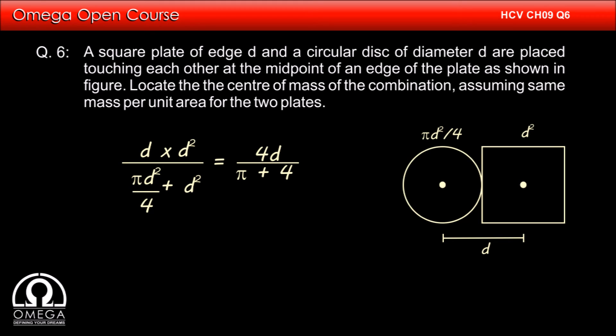Thus the center of mass of the system is at a distance of 4d divided by pi plus 4 from the center of circular plate towards the right. This is our answer.